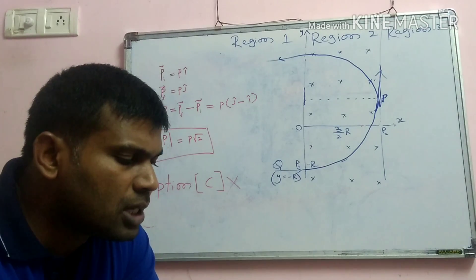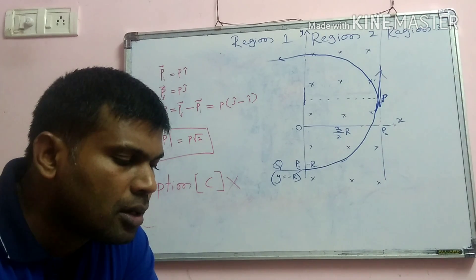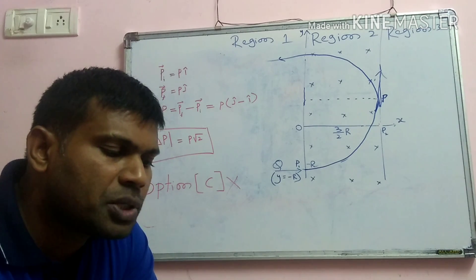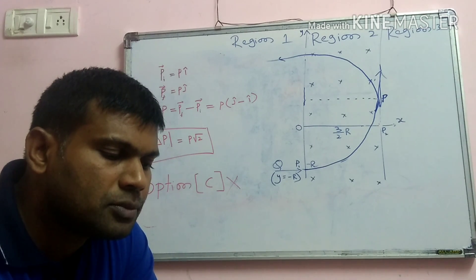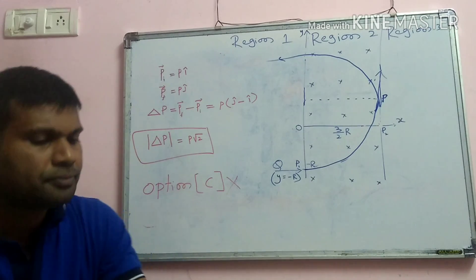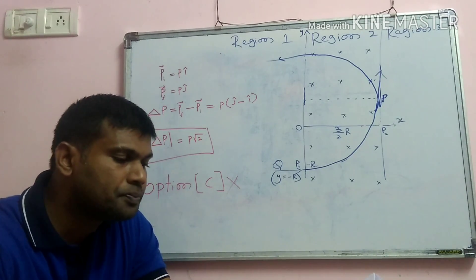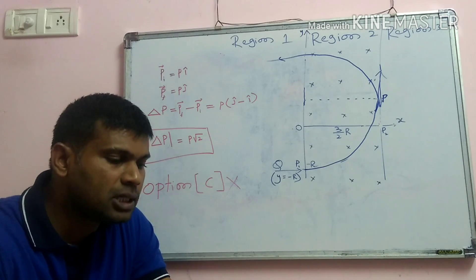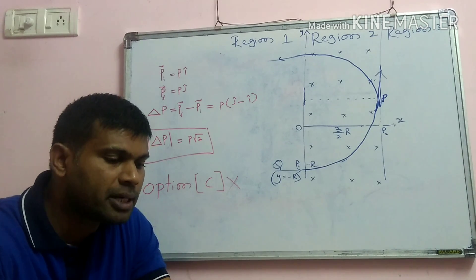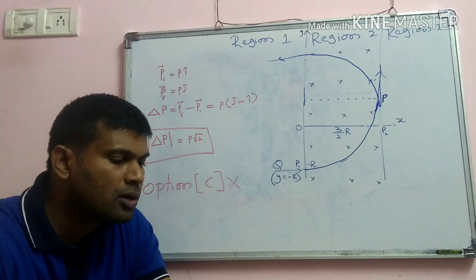Now we check option C: when the particle re-enters region 1 through the longest possible path in region 2, the magnitude of change in its linear momentum between point P1 and the farthest point from the y-axis is p/√2.